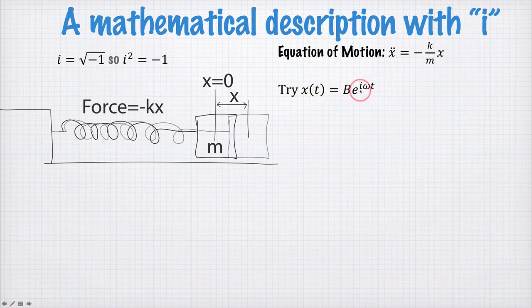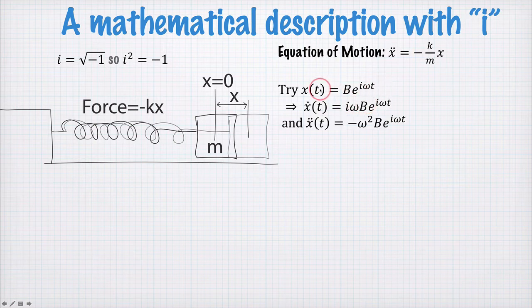So I've changed from A to B here for reasons that will become clear, and I've left off phi. We don't need phi when we think about it this way. So as before, we need to find the second derivative, x double dot. So we can put it into this equation here and find a condition on omega squared.